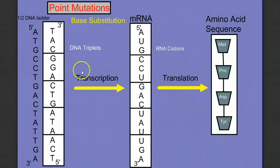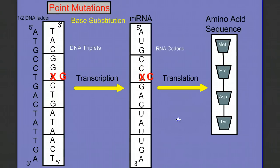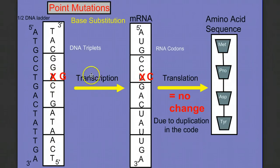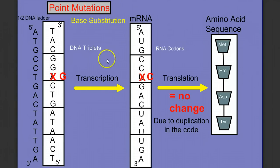What if we had a different base substitution — instead of this A we had a G, which makes this U a C? CCU was proline. Looking at the codon chart, CCC is also proline. Because of the duplication of the code, this base substitution caused no change in the shape or structure of our protein. So sometimes a base substitution can have a slight effect, changing one amino acid to another. And sometimes it can have no effect. But if a single base substitution were to change a codon to a stop codon, that could have a drastic effect on the structure and function of the protein. The severity of a base substitution depends on which base is being substituted.